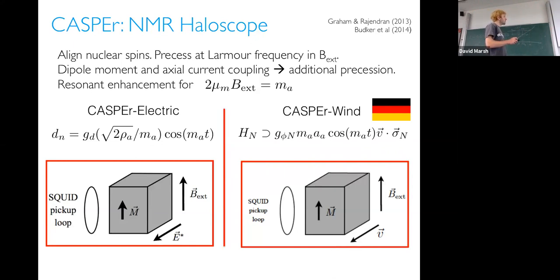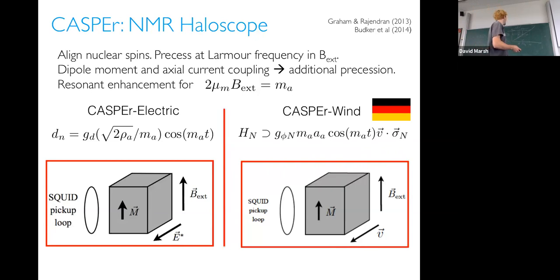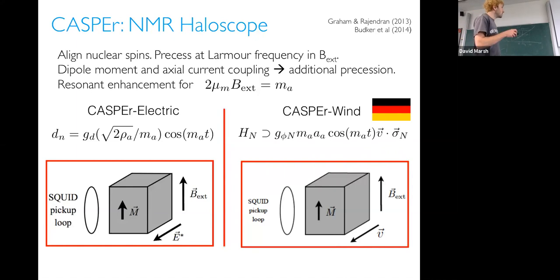Both CASPER Electric and CASPER Wind are really exciting because they probe new axion couplings — nucleon couplings. The laboratory constraints come from fifth forces, and there are constraints from stellar cooling similar to those in the photon plane. An advantage over a cavity haloscope is that you tune the resonant frequency by changing your applied magnetic field — no mechanical changes needed. You just take an NMR sample, put it in a magnet, and tune the magnet to change the resonant frequency.